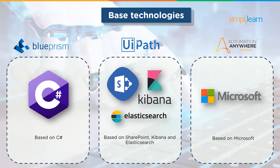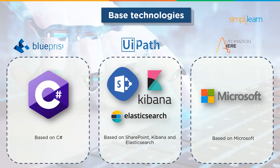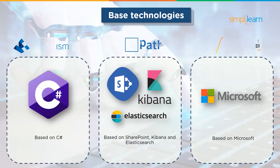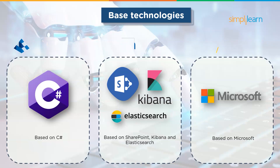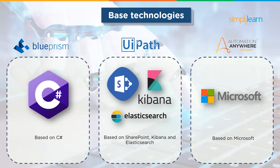Moving on to the next criteria, base technologies. Blue Prism is based on C#. UiPath on the other hand is based on SharePoint, Elasticsearch and Kibana, and Automation Anywhere is based on Microsoft.